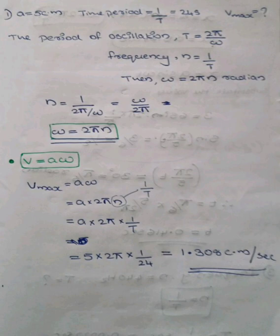For the first question, amplitude A equals 5 cm and time period T equals 24 seconds. We need the maximum velocity. The maximum velocity equation is V_max equals A times ω. Substituting omega: ω equals 2πn. Since n equals 1 by T, omega equals 2π times 1 by T.